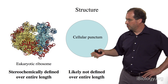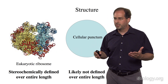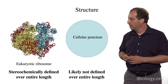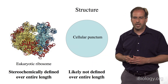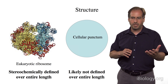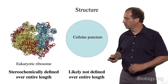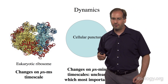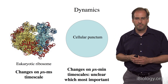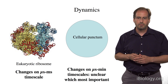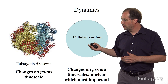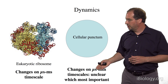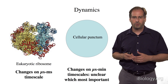These structures are also very different at the level of structure. Macromolecular complexes are stereochemically defined across their entire length, so knowing where one amino acid is tells you the organization at the other end of the molecule. However, these cellular puncta are almost certainly not defined over their entire lengths, and we don't know on which length scales they are stereochemically defined. In terms of dynamics, much biochemistry of macromolecular machines is governed by fluctuations on microsecond and millisecond timescales, whereas molecules in cellular structures also move on much longer timescales — seconds to minutes — and it's unclear which timescales are most important to function.